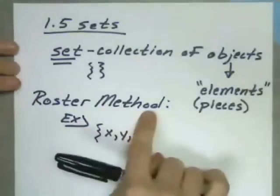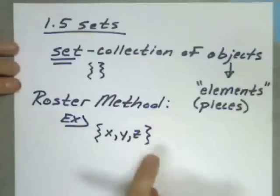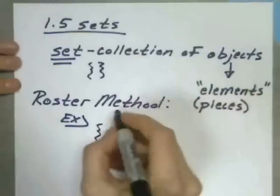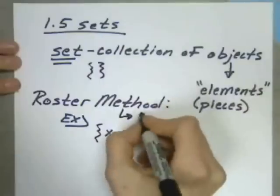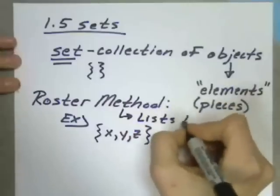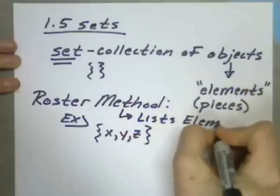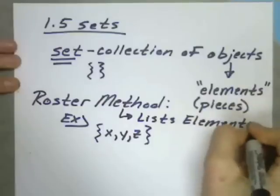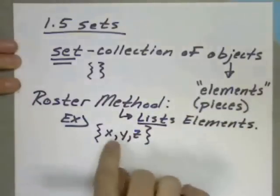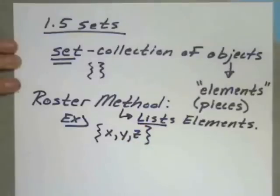Now the roster method, this first example that I've given you within that, what it does is it actually lists the pieces. It lists the elements. So see here how we have them listed with commas in between? That's an example.